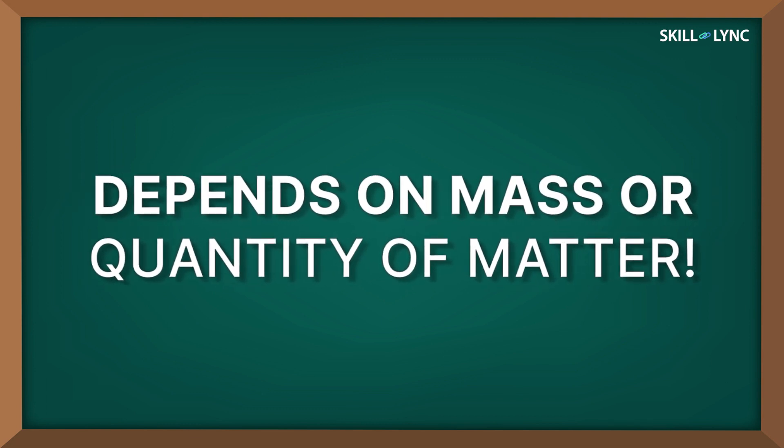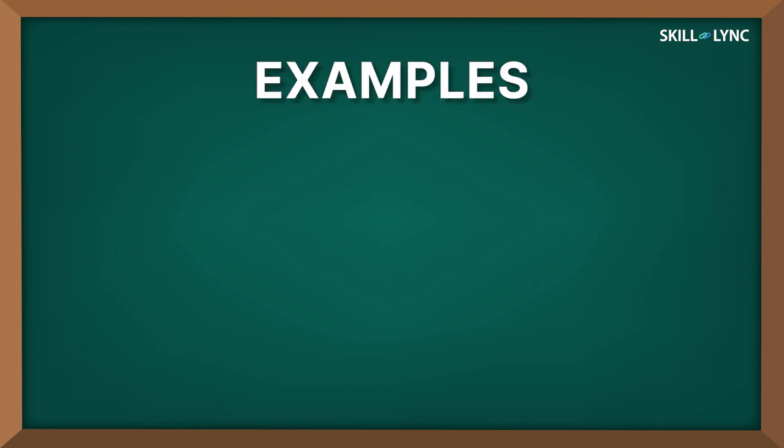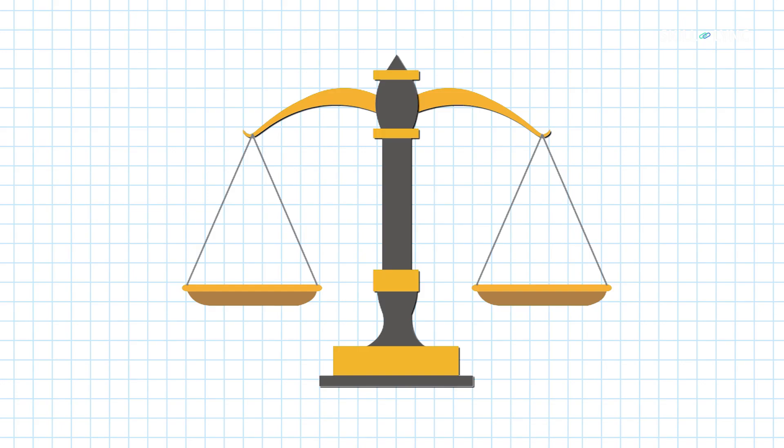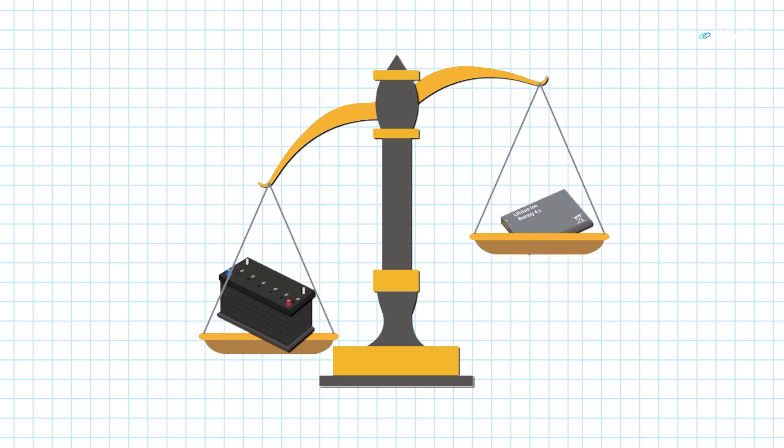Extensive properties are those properties which depend on the mass or quantity of matter in the system. Examples of extensive properties are volume, mass, energy, weight, etc. The energy and weight of the system varies when the mass or quantity of matter inside the system is varied.